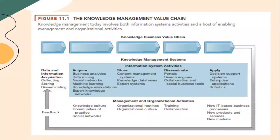In Figure 11.1, the knowledge management value chain shows that knowledge management involves both information systems and a host of enabling management and organization activities. In the acquire stage, there is business analytics, data mining, neural networks, machine learning, knowledge workstations, and expert knowledge networks. In the store stage, there are content management systems, knowledge databases, and expert systems. In the disseminate stage, we have portals, search engines, and collaboration and social business tools. And in the apply stage, there are decision support systems, interface applications, and robotics.